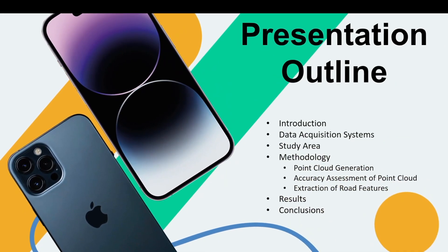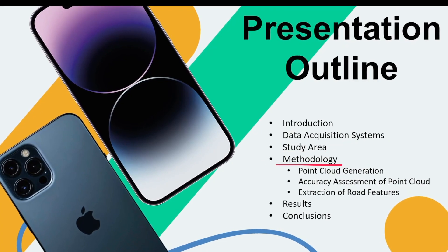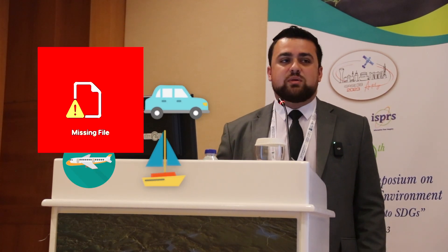A little outline for you: we'll talk about what got us into this experiment, the data acquisition for comparable data sets, the area we studied, the methodology, the results, and our conclusions. We wanted to look at mobile mapping systems because that was a pretty fundamental and well-understood way of collecting data. Any mapping system is going to have an integrated GNSS receiver for positional accuracy, an IMU for movement measurements, a LiDAR sensor, and a camera sensor. These are integrated together and usually put on a drone, car, plane, or boat, moving at velocity and collecting data.